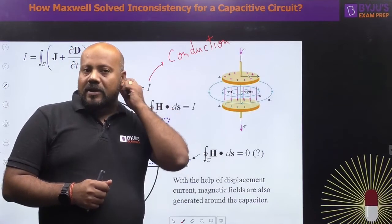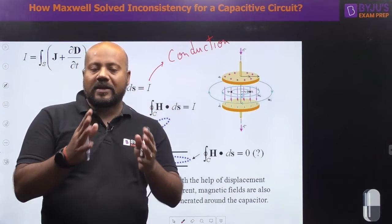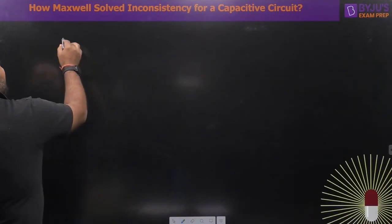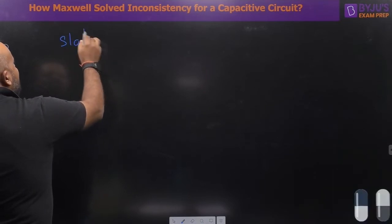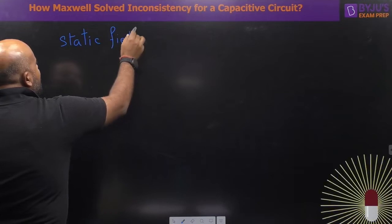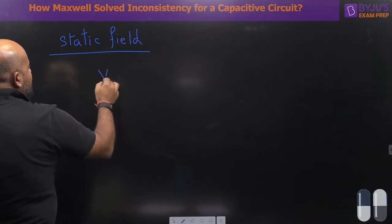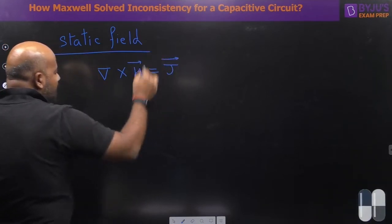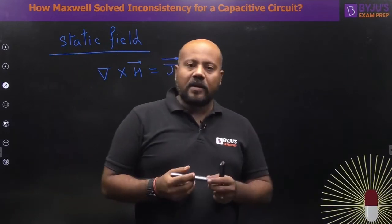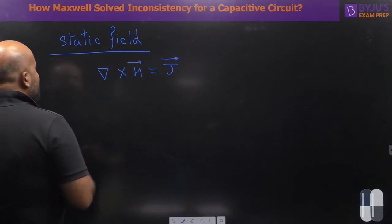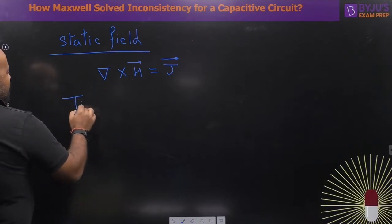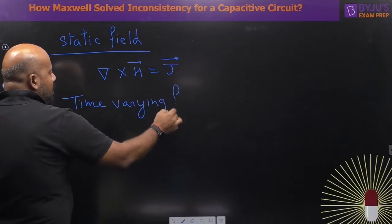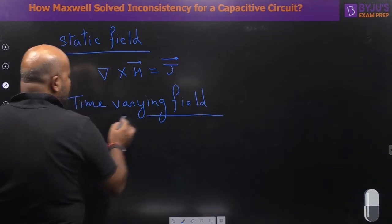This inconsistency was solved by Maxwell. What did he do? Suppose you write the Maxwell equation for a static field. The Maxwell equation for a static field is: ∇×H = J, where J is the conduction current density. Now, the same equation we are going to apply to the time-varying field. If the source is time-varying, let us see what is going to happen.